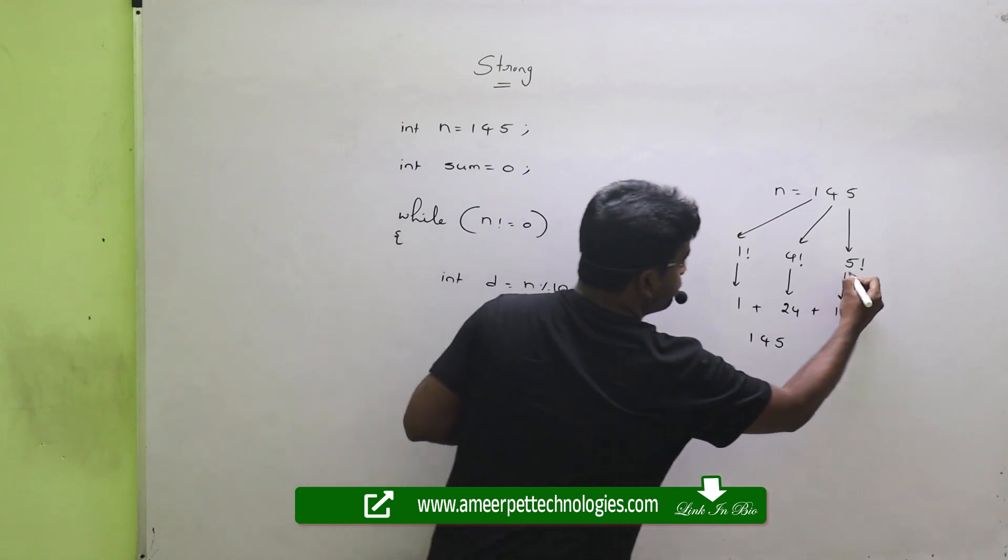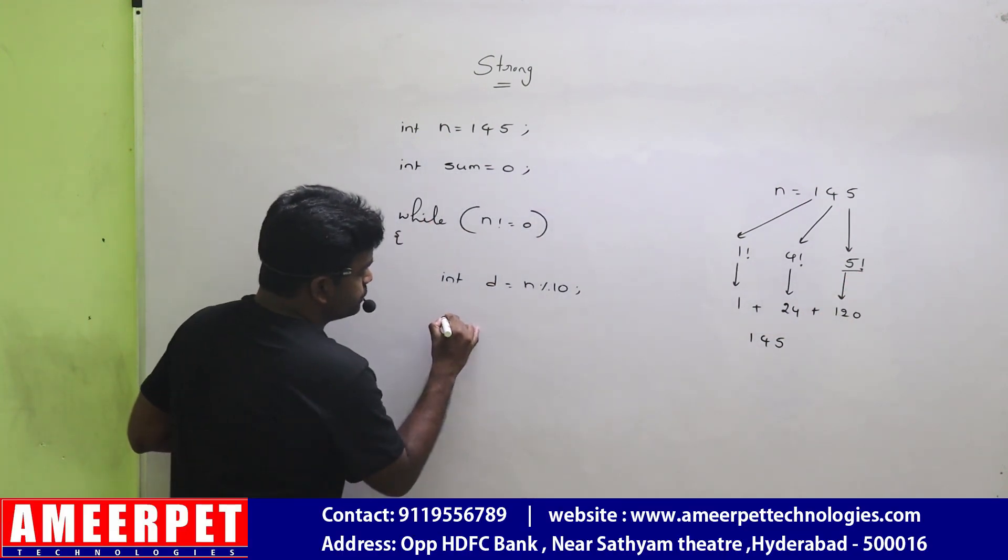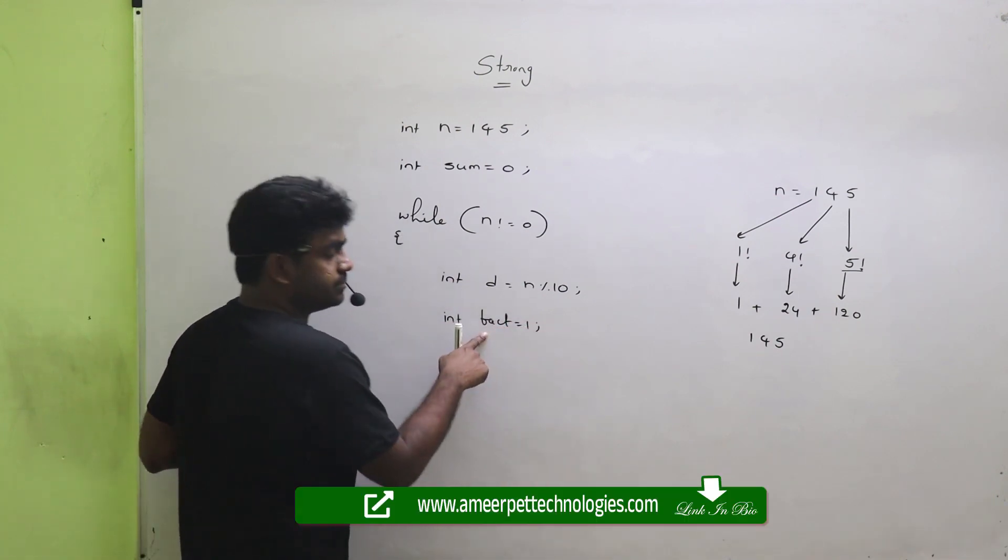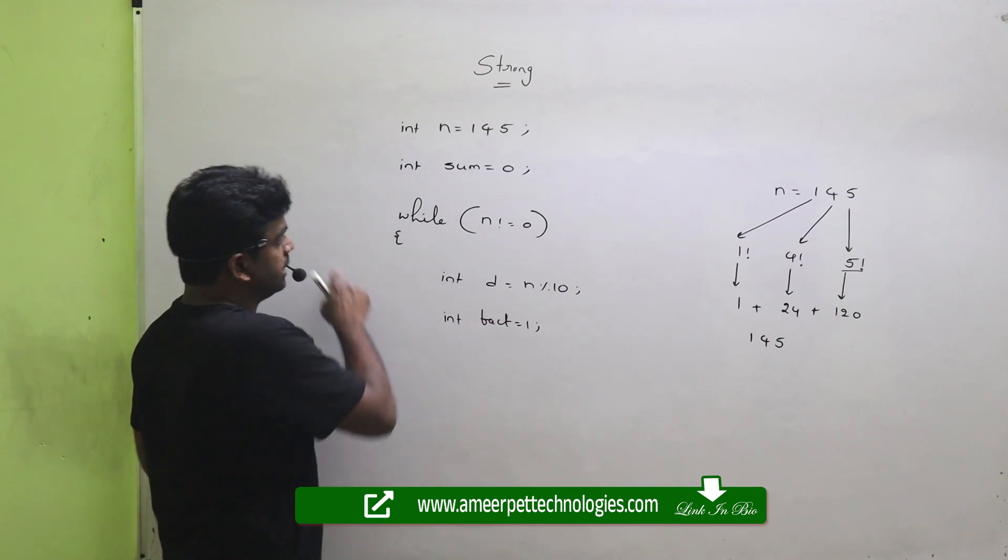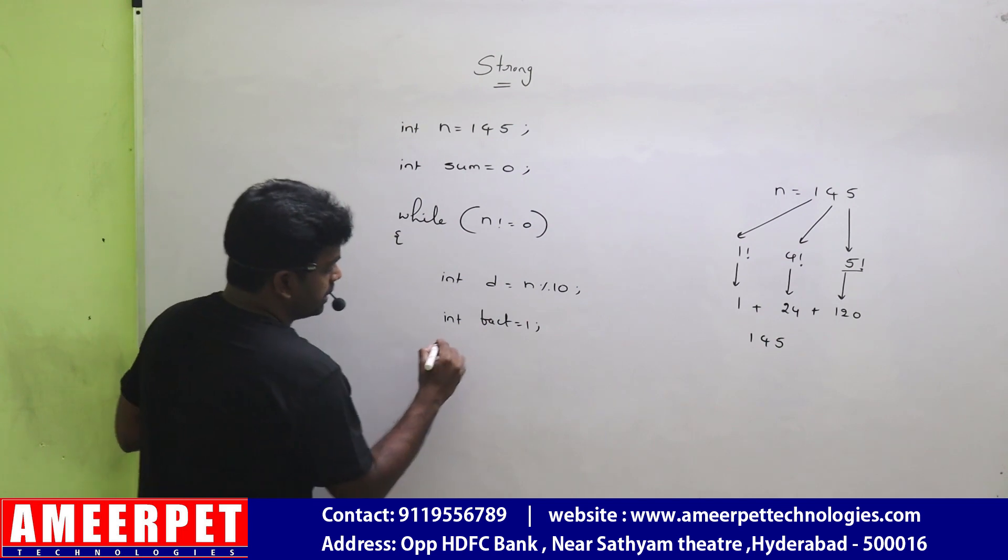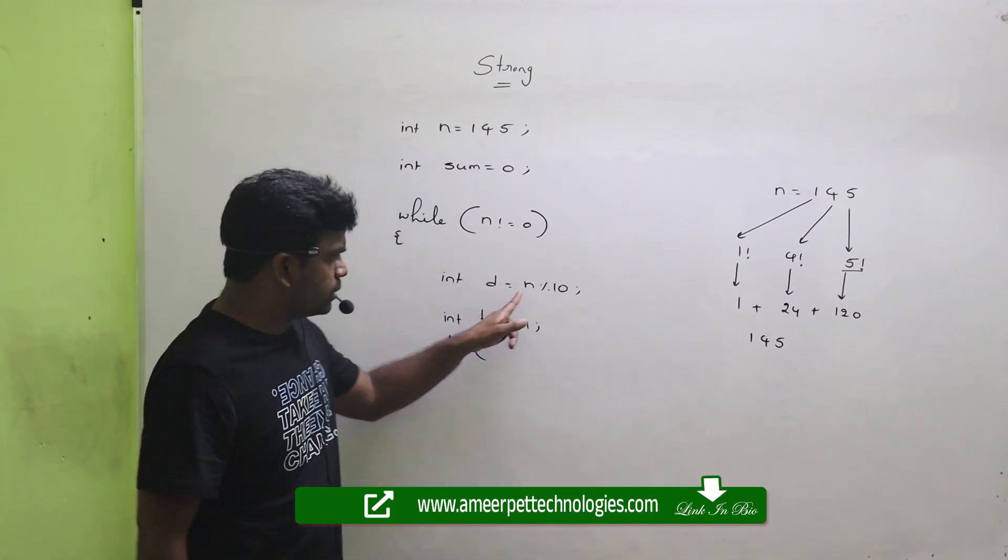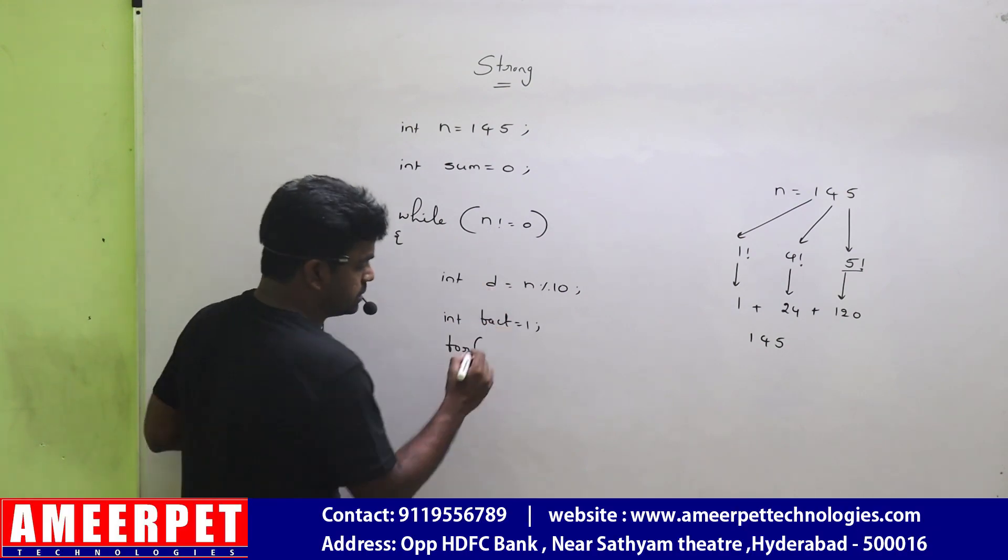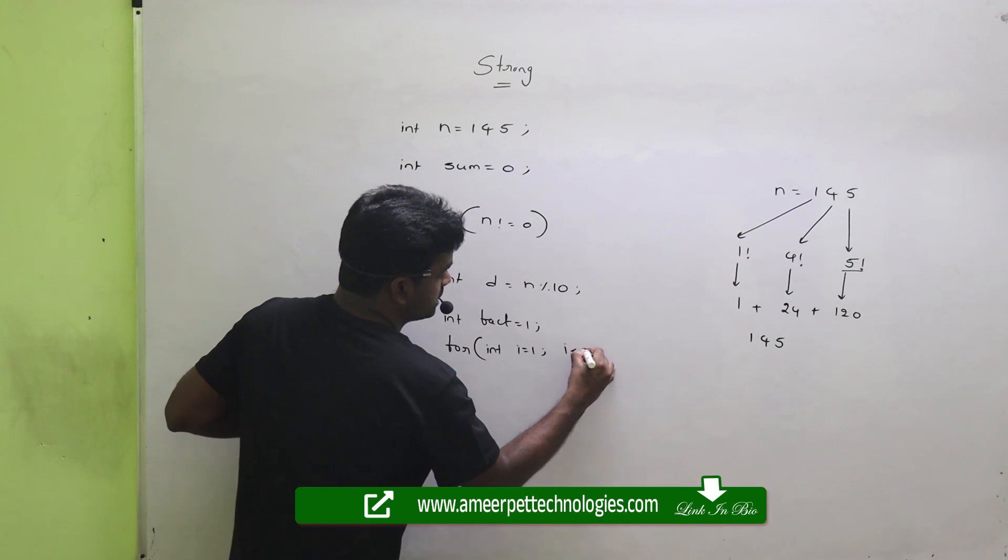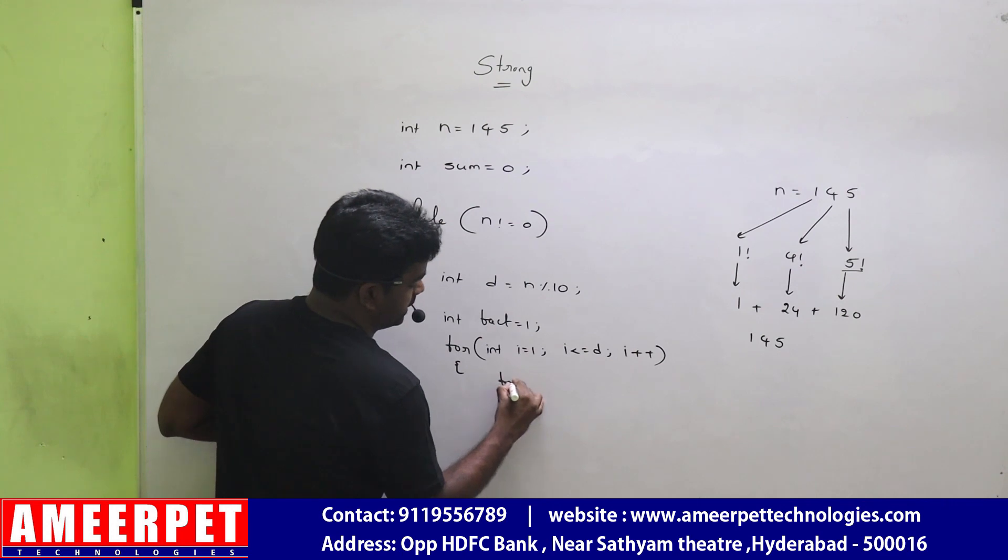After getting the digit, find the factorial for that digit. So this is the factorial logic—very important. Declare the fact variable here only. You must declare here because for each digit you need to find the factorial. Here, repeating the loop: which factorial we need to find out? Not n factorial, d factorial we are finding. So: int i equals to 1, i less than or equals to d, i++. Just we are taking fact equals to fact multiplied with i.